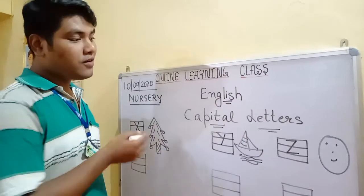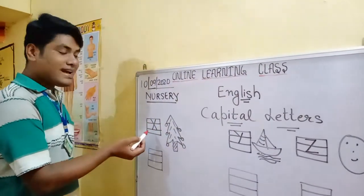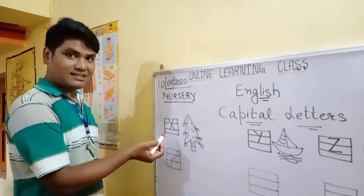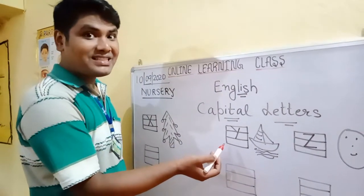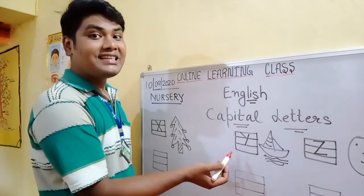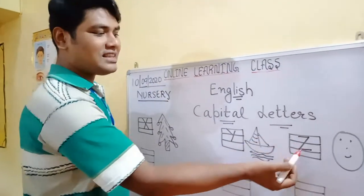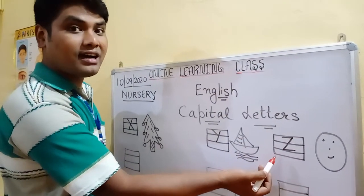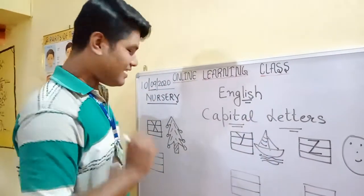What are the phonic sounds of these letters? X — the phonic sound is X. Y — the phonic sound is Y. And the phonic sound of Z is Z. Z for zero. Okay?